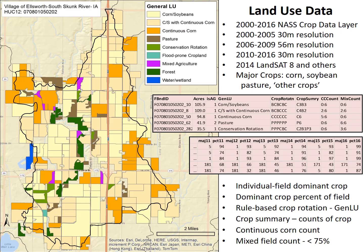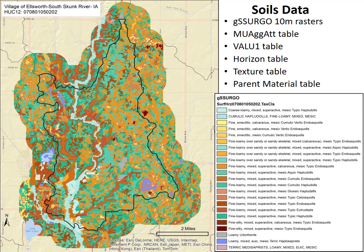For each watershed in the ACPF database, land use data are assembled for the last nine years, currently 2008 through 2016. These data are held in the crop history table, and for each field the dominant crop is identified and its representative percentage of that field is calculated for each year. Using the last six years of land use data, we capture a variety of information that we can use to assign a crop rotation or general land use class for each individual field.